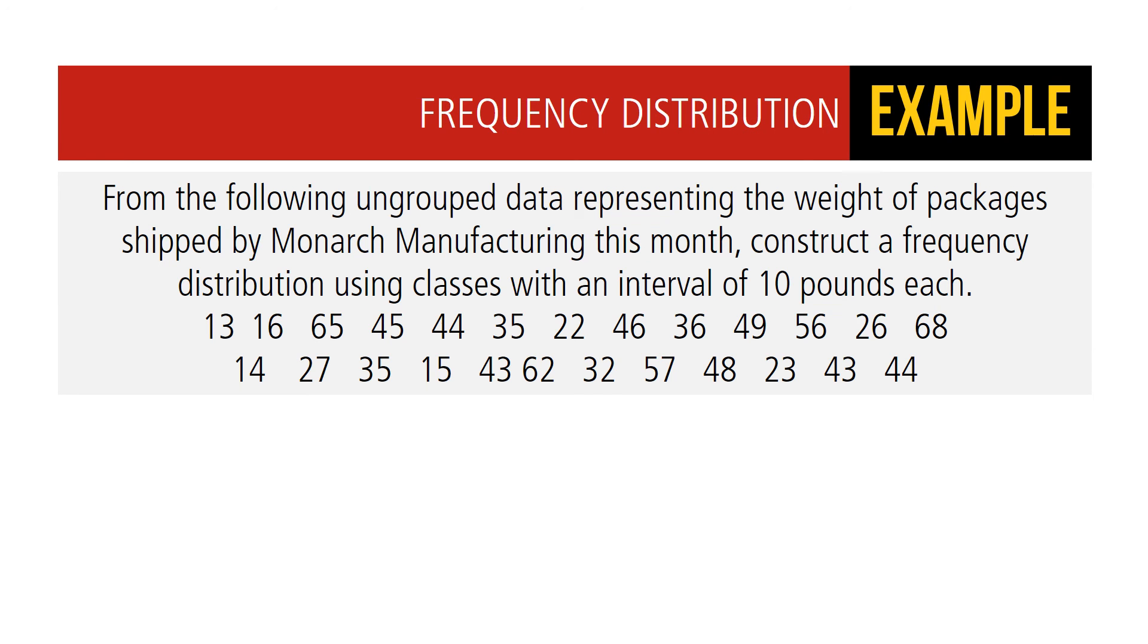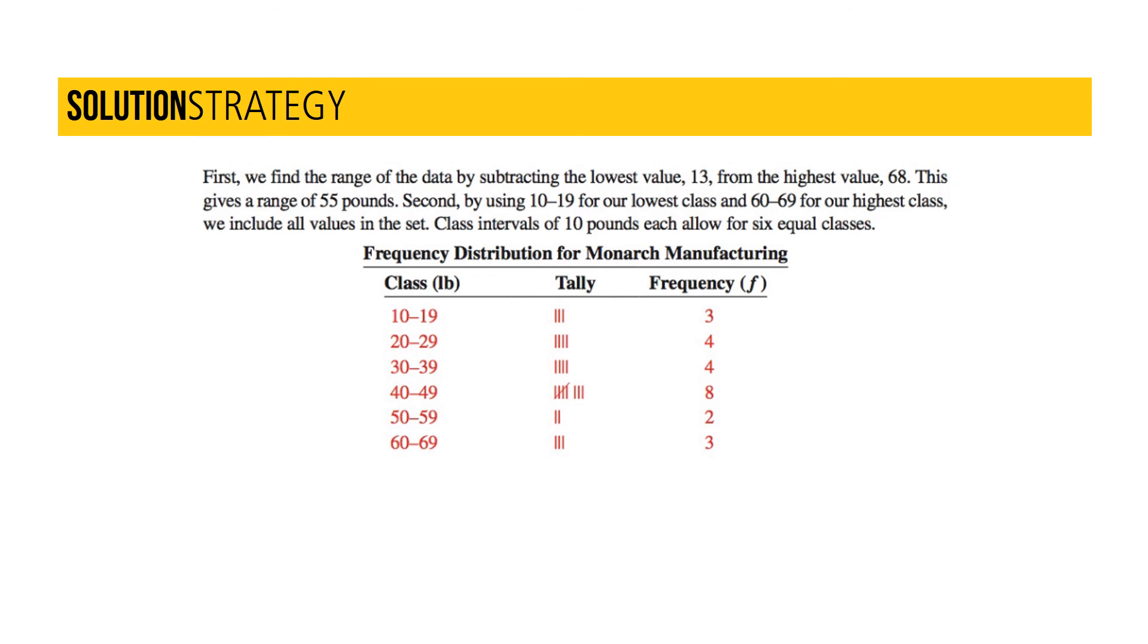Let's take a look at this in practice. From the following ungrouped data representing the weight of packages shipped by a manufacturer, construct a frequency distribution using classes with an interval of 10 pounds each. In our solution strategy, first we find the range of the data by subtracting the lowest value 13 from the highest value 68. This gives us a range of 55 pounds. Second, by using 10 through 19 for our lowest class and 60 through 69 for our highest class, we include all values in the set. Class intervals of 10 pounds each allow for six equal classes. You can see them below, along with the tally marks and ultimately the frequency or f rankings.